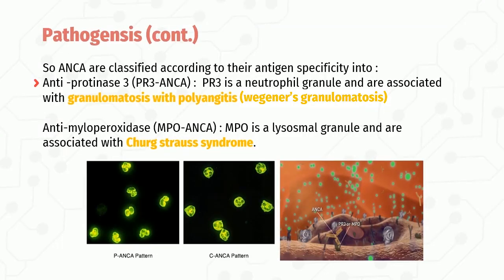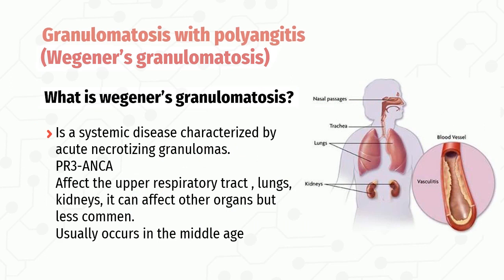ANCAs are classified according to antigen specificity: anti-proteinase 3 (PR3), where proteinase 3 is a neutrophil granule protein, is associated with granulomatosis with polyangiitis (Wegener's granulomatosis); and anti-myeloperoxidase (MPO), where myeloperoxidase is a lysosomal granule protein, is associated with Churg-Strauss syndrome. Wegener's granulomatosis is a systemic disease characterized by acute necrotizing granulomas; it is associated with PR3-ANCA and affects the upper respiratory tract, lungs, and kidneys, with other organs affected less commonly. It usually occurs in middle age.